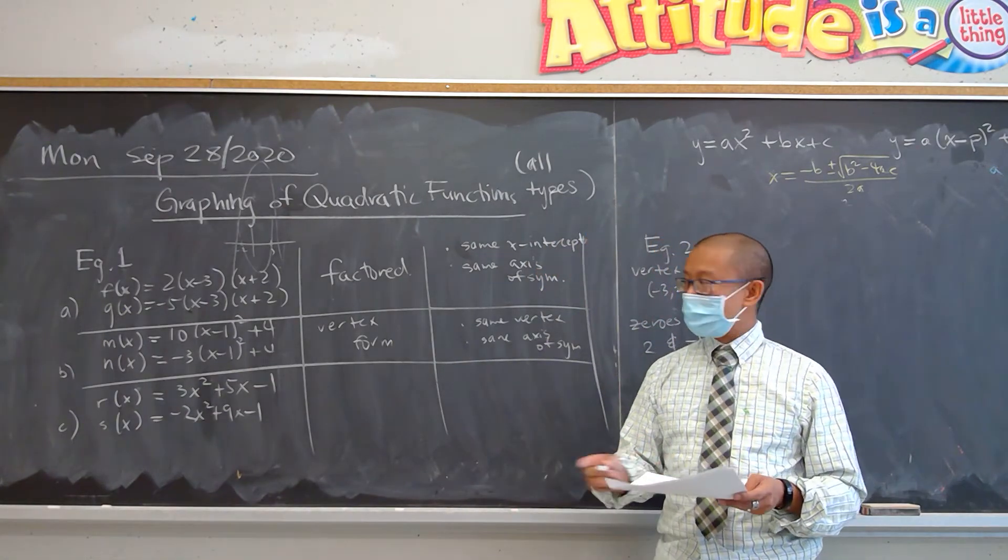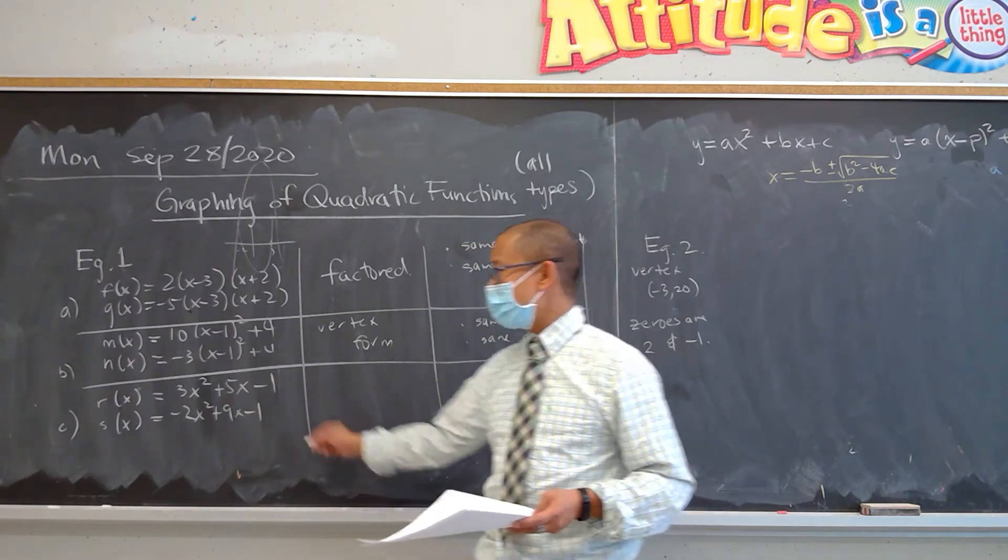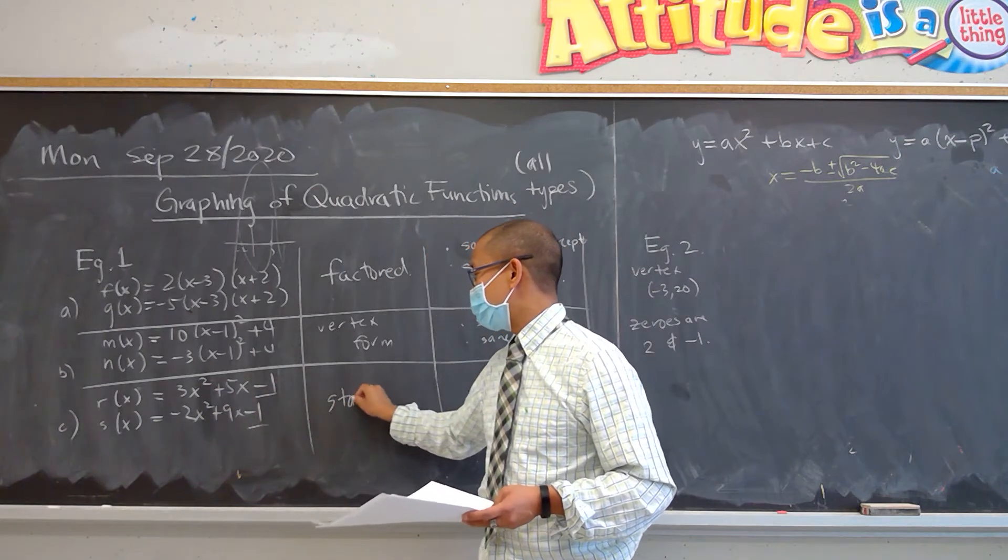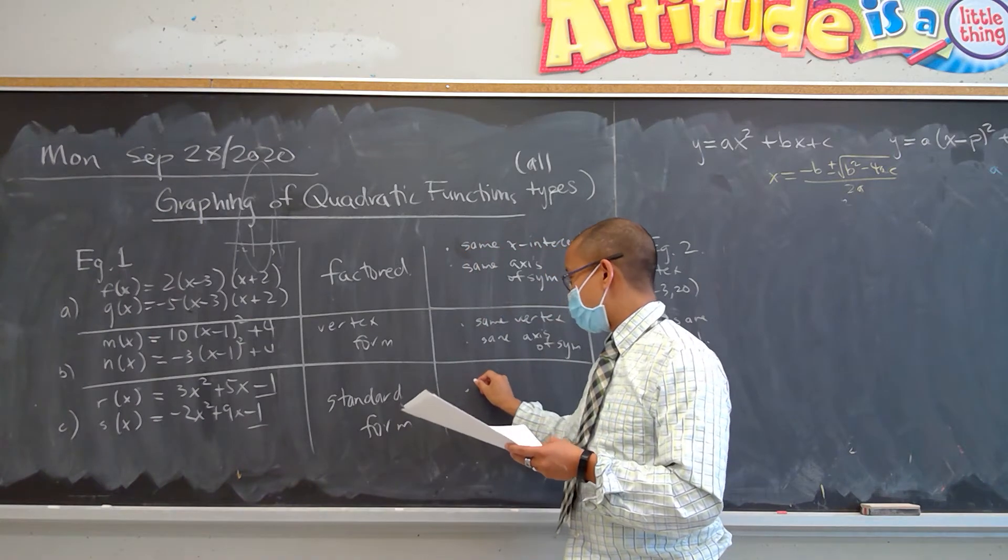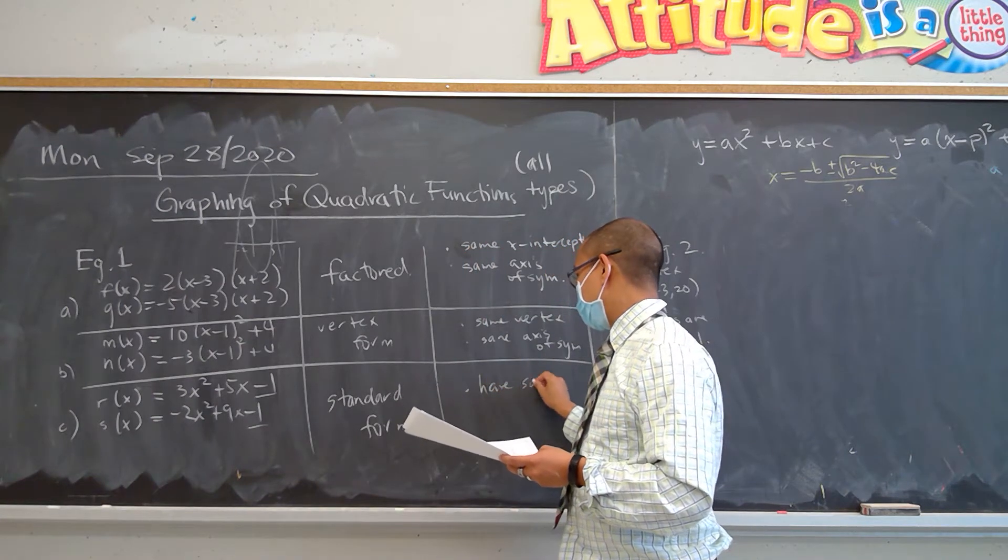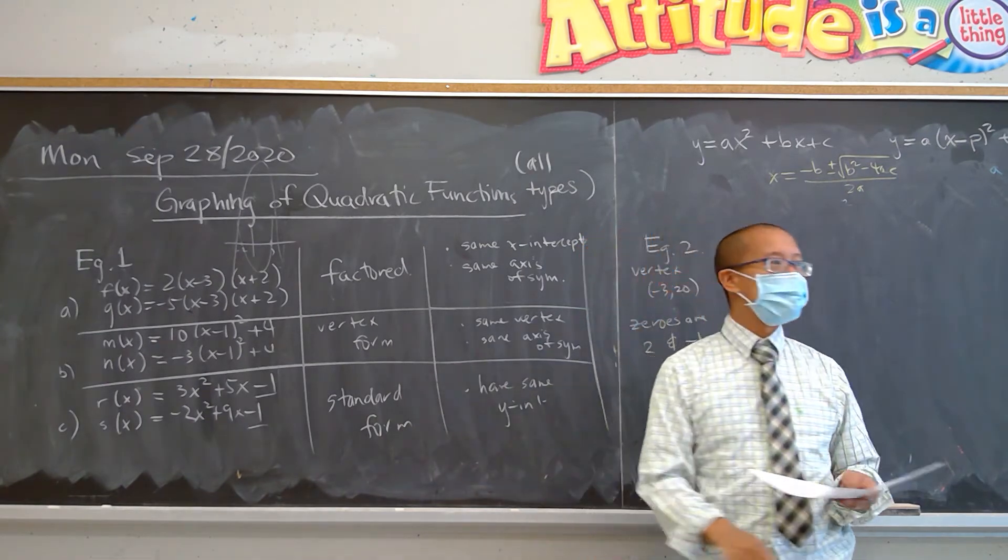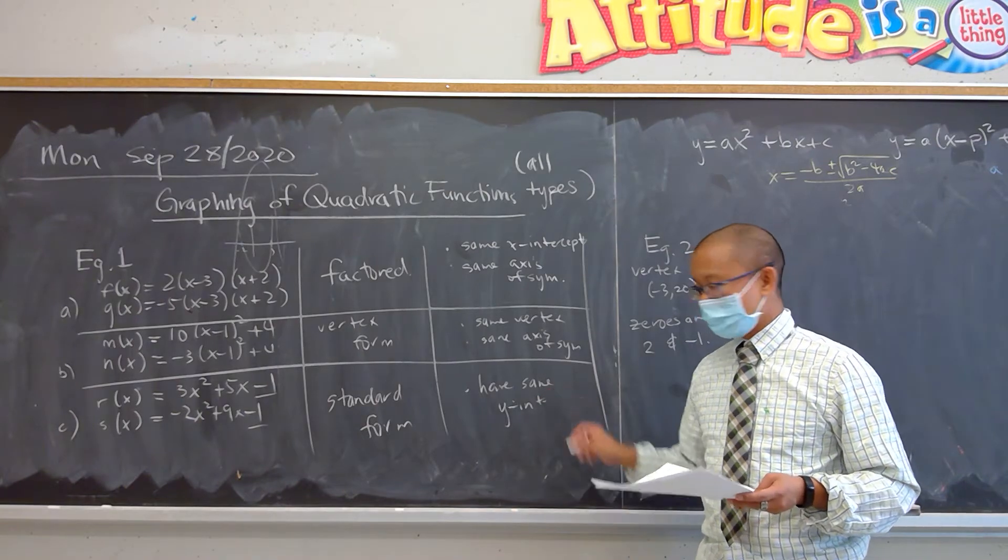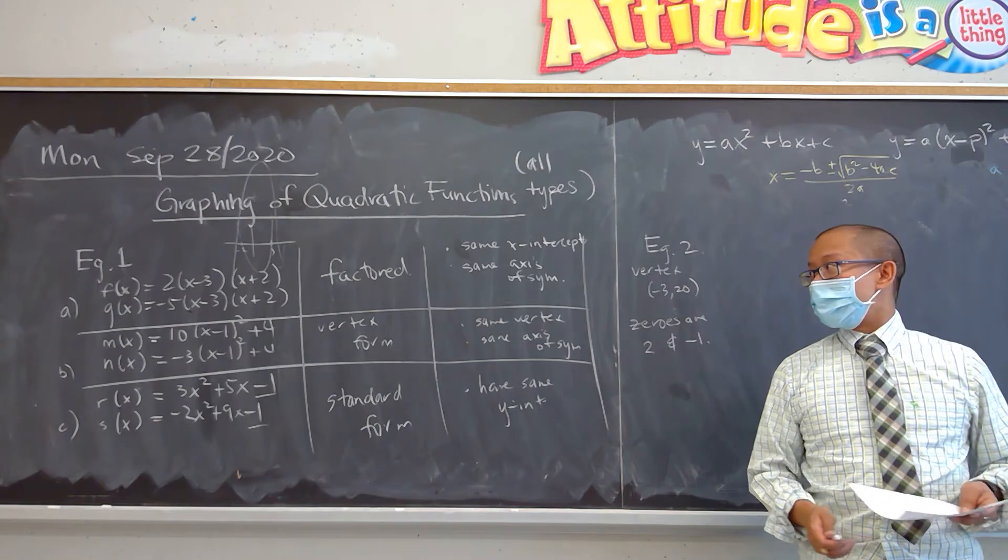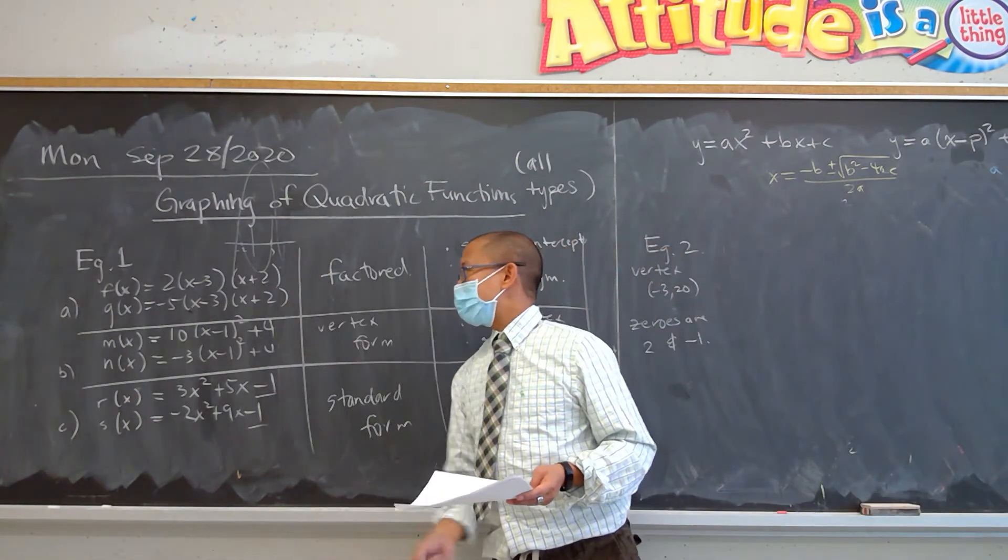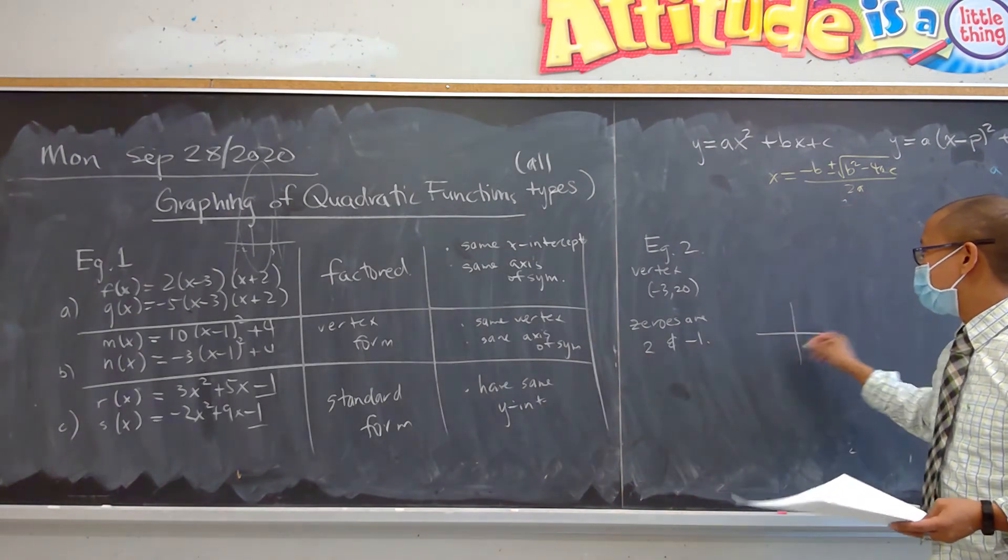Finally, for question C, you realize if you read the r(x) and s(x) functions, they both have the same c value, right? So this is clearly standard form and they have the same y-intercept. I'm not going to sketch question B or C. A lot of you realize whether these two parabolas are going to cross. Okay, so this is what we call families.